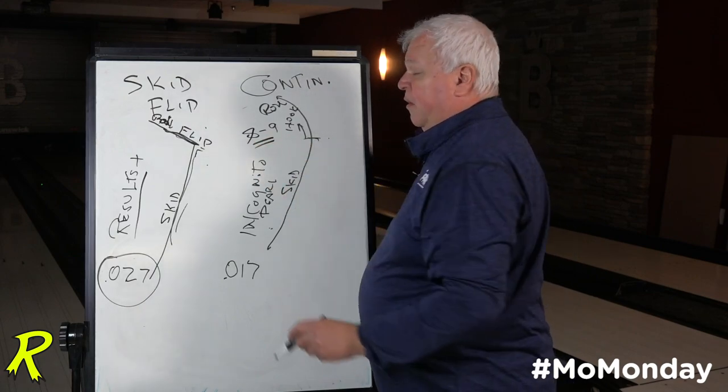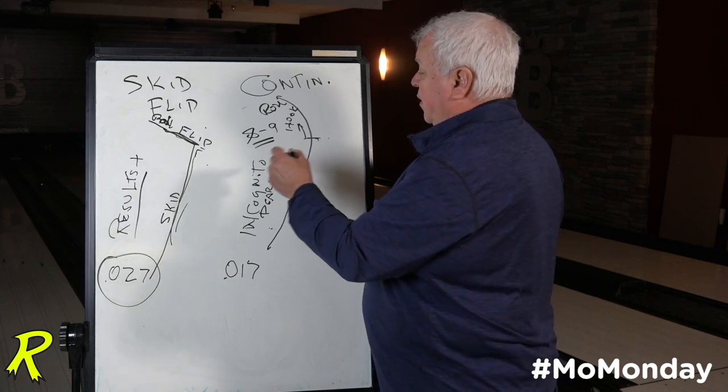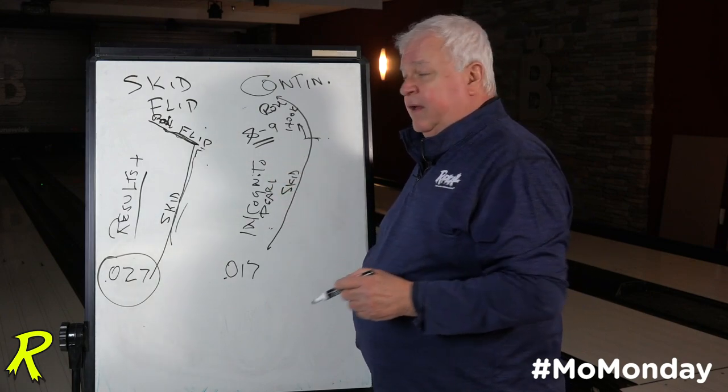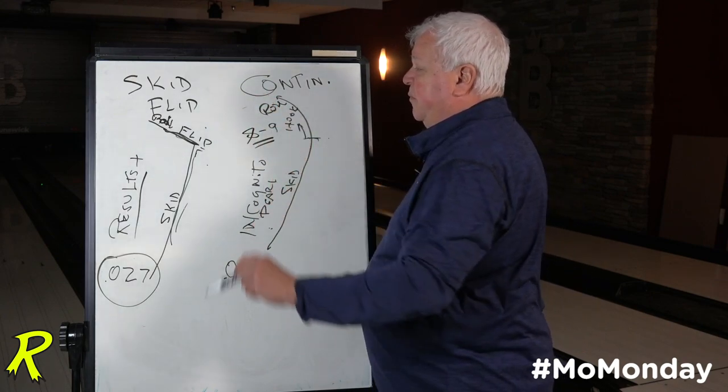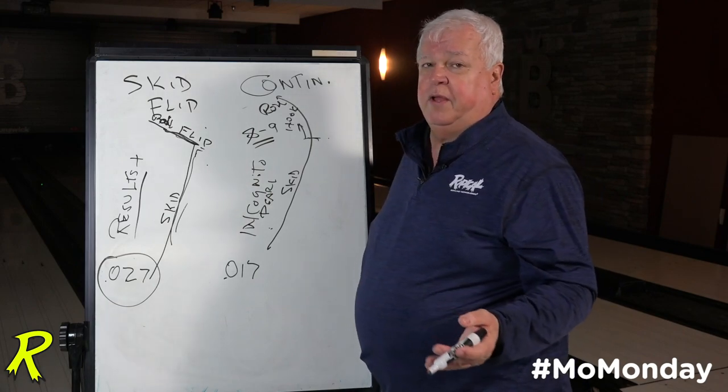And this here, obviously, is what we always preach when it comes to ball motion in our videos. We like to see balls split the 8-9. In the case of the skid flip ball, it's probably the angle of entry that's creating more strikes, not so much the continuation with the pins.